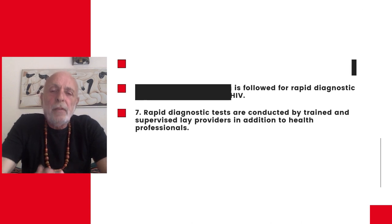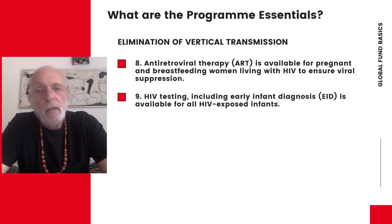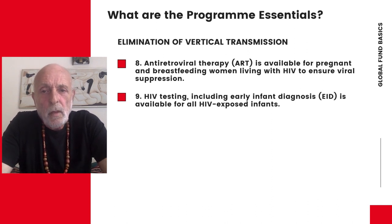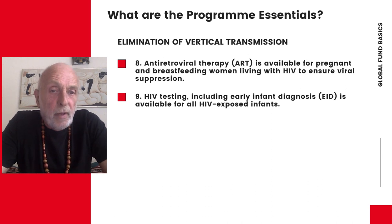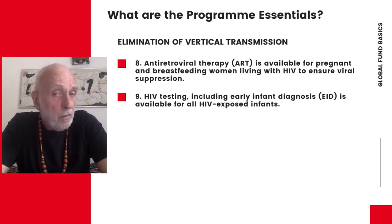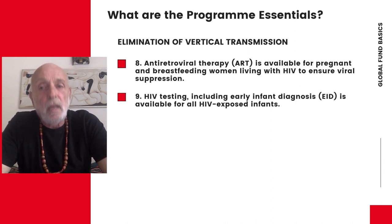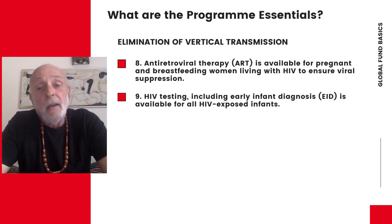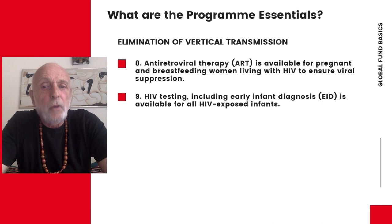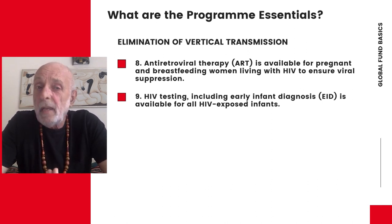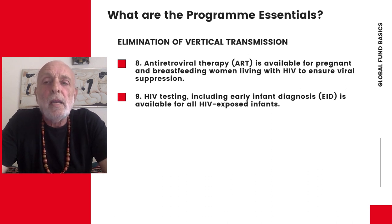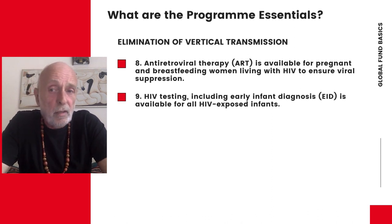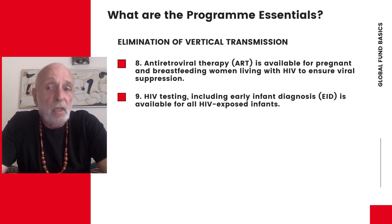The third theme is the elimination of vertical transmission, with two program essentials. Antiretroviral therapy (ART) is available for pregnant and breastfeeding women living with HIV to ensure viral suppression. HIV testing, including early infant diagnosis, is available for all HIV-exposed infants. If, as a sex worker who becomes pregnant, you are not offered ART, or if you have a young infant who is not offered — and I mean offered, not insisted upon — early infant diagnosis of HIV, then this is something you should bring to the attention of the principal recipient, the CCM, and the FPM.